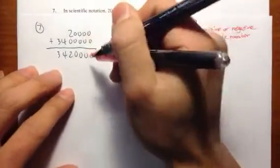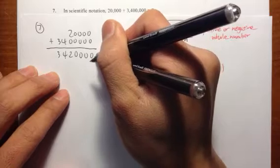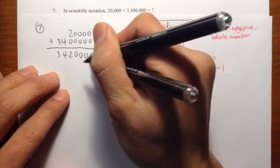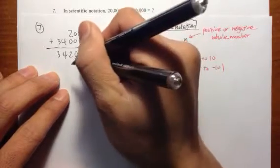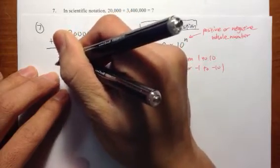So we can do that by, let's check this out. Move the decimal point once, twice, three times, four, five, six times, till here.